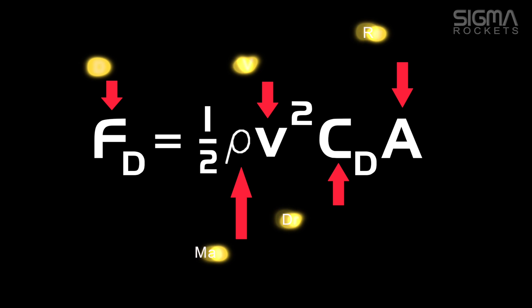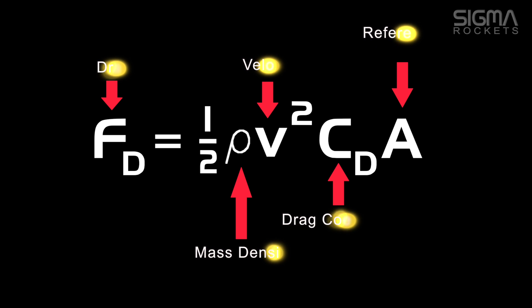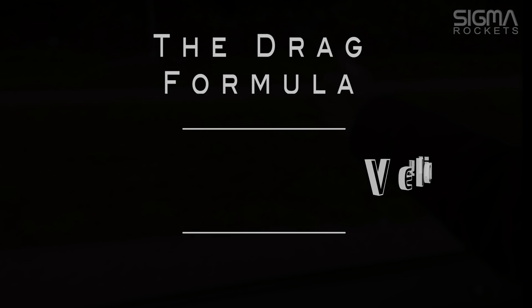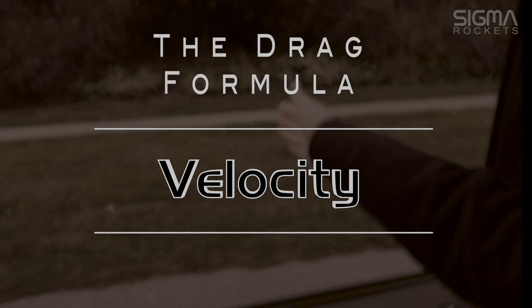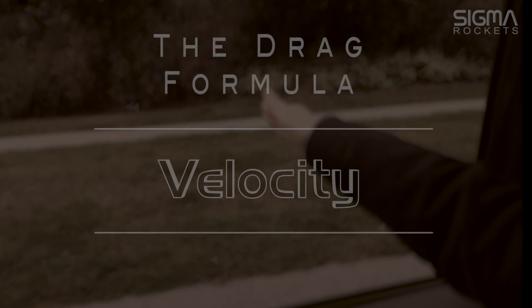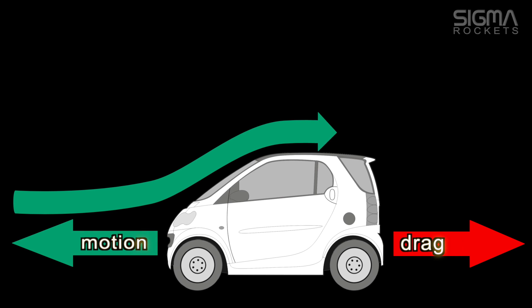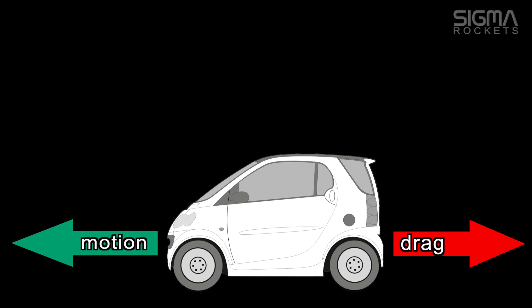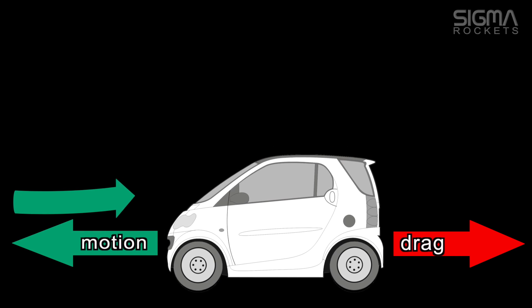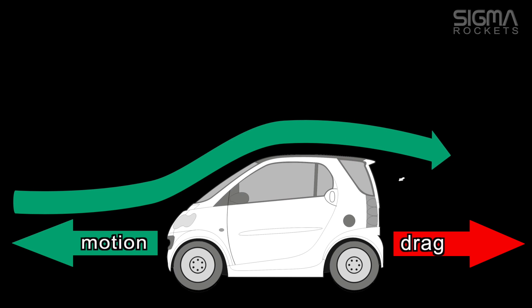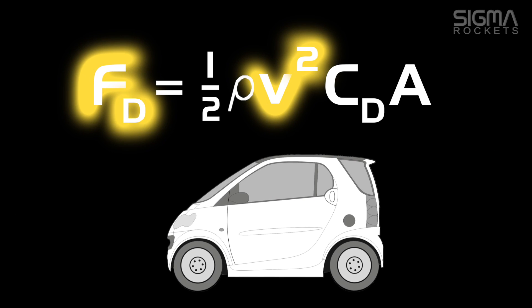The drag formula is this. We may use this formula to show air resistance on a car as it moves down the highway. As we can see, the aerodynamic drag increases with the square of the velocity.